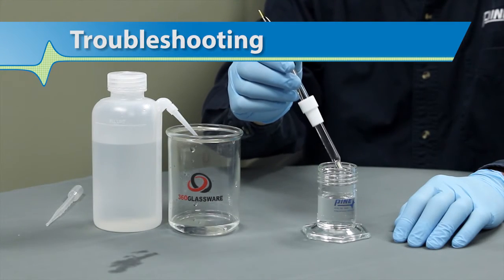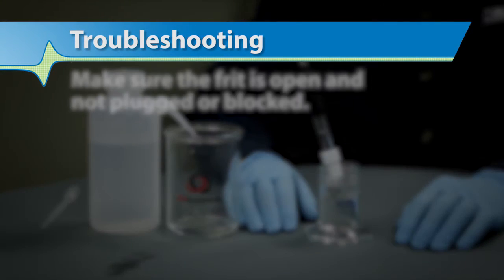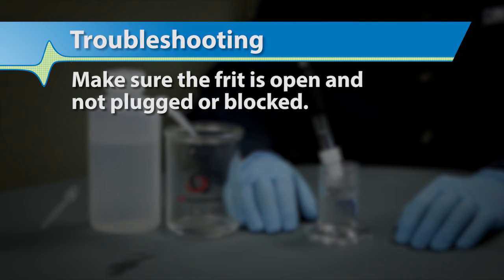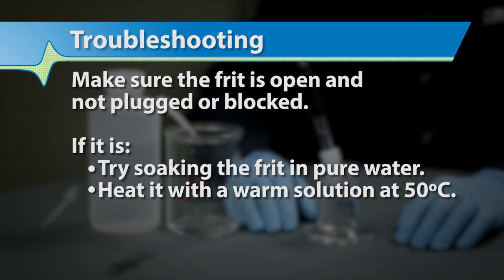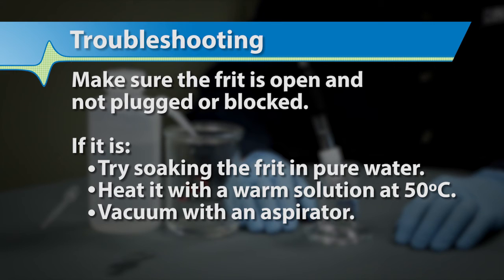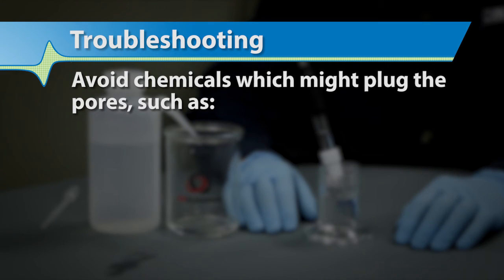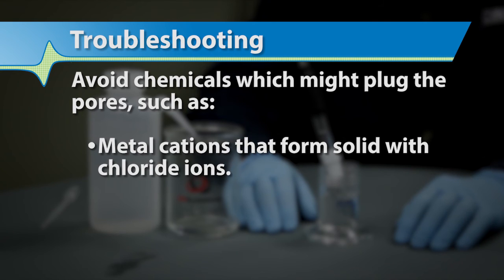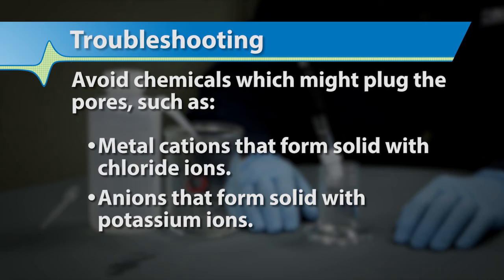Some troubleshooting things to consider if you're having issues with your reference electrode are as follows: Make sure the frit is open and not plugged or blocked. If it is, try soaking the frit in pure water. You can also heat it with a warm solution at about 50 degrees Celsius. Another option to get it unblocked is to vacuum it with an aspirator. You should also avoid any chemicals which might plug the pores, such as metal cations that form solids with chloride ions or any anions that form solids with potassium ions.